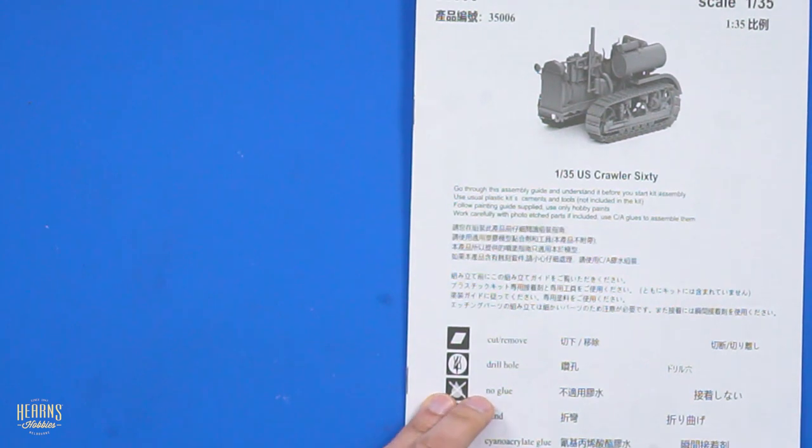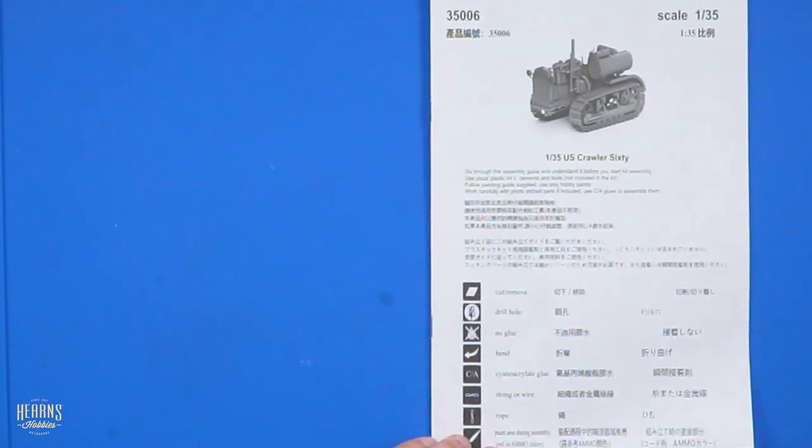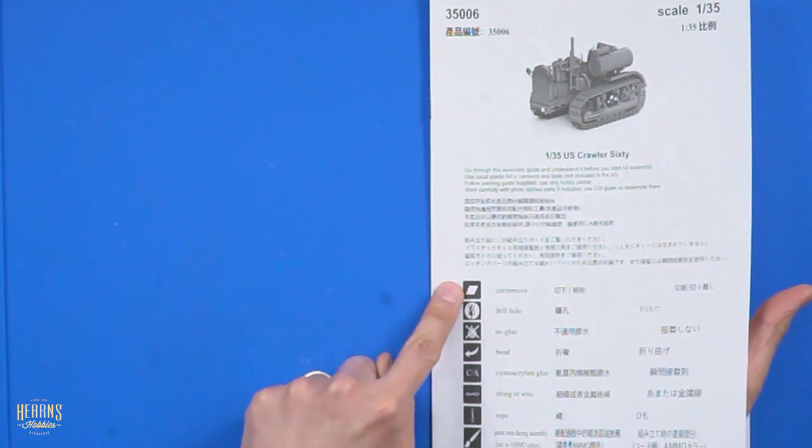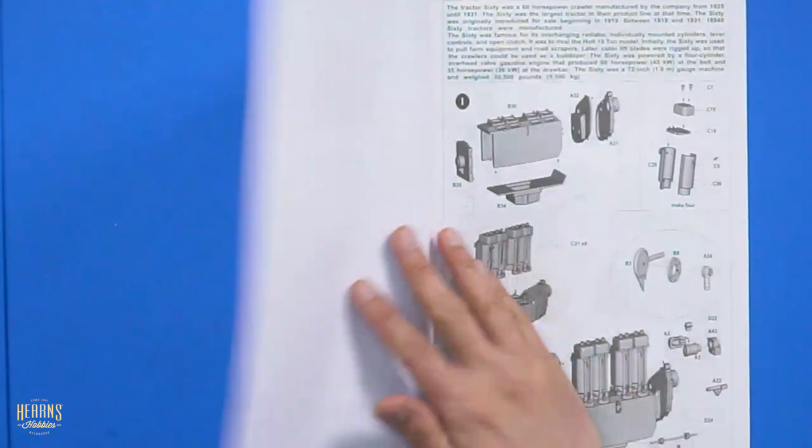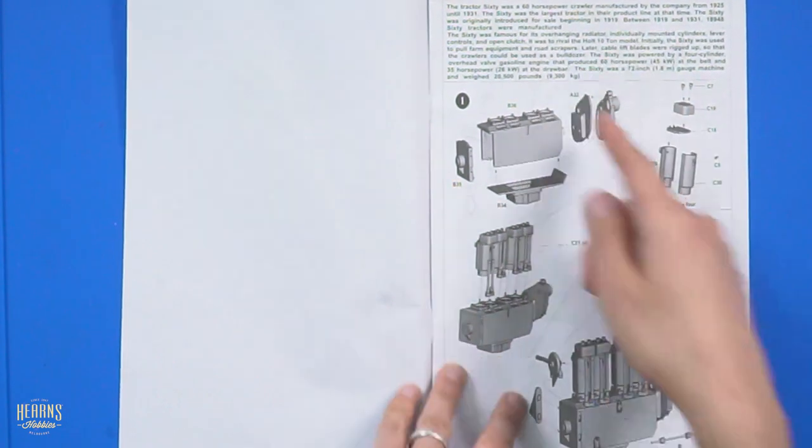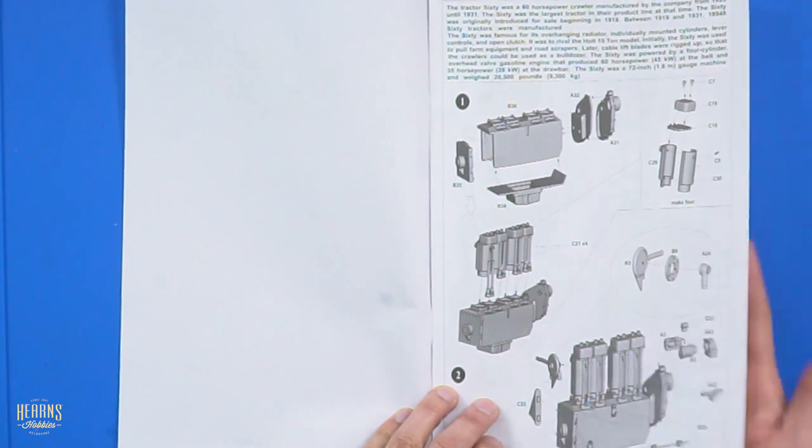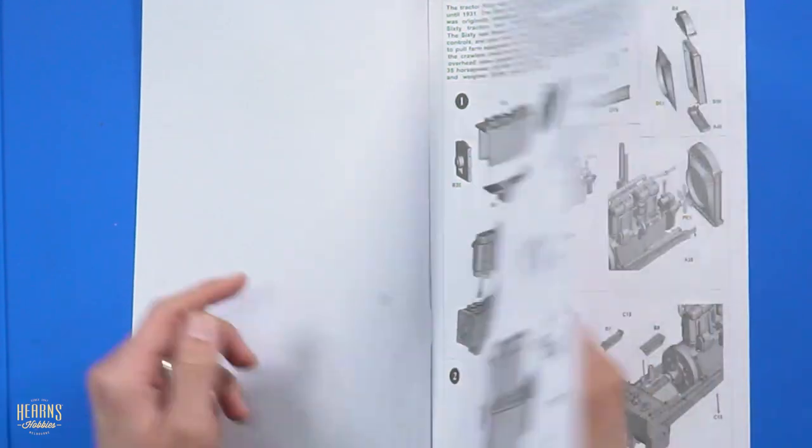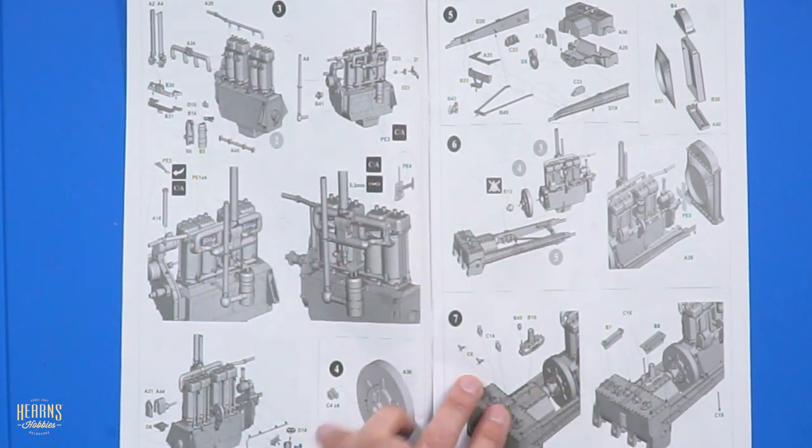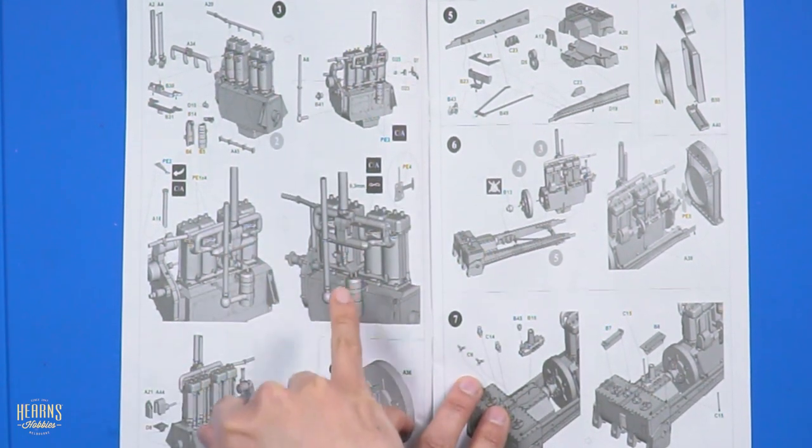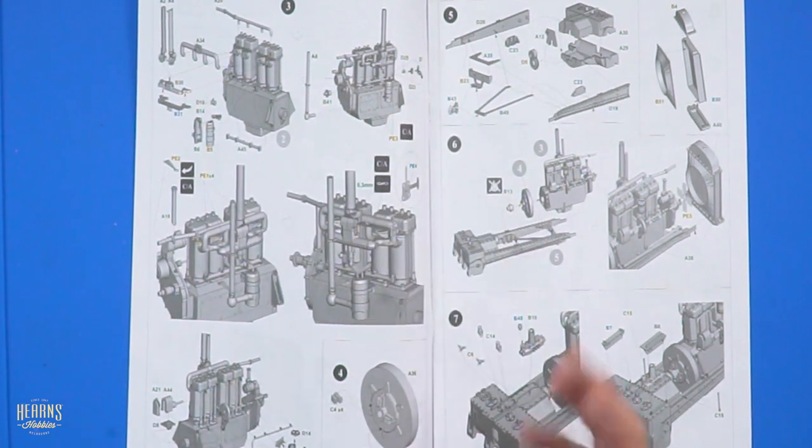So from there we've got the actual assembly instructions, which are really tight inside the box. They've got an explanation of the symbols used during the construction. And then we get straight into it. You've got a little bit of history written there. We get straight into the engine. So four cylinder, 60 horsepower, engine mounts going on there. Lots of piping going on. So you can see what I mean by how complicated they look because that's all exposed engine.